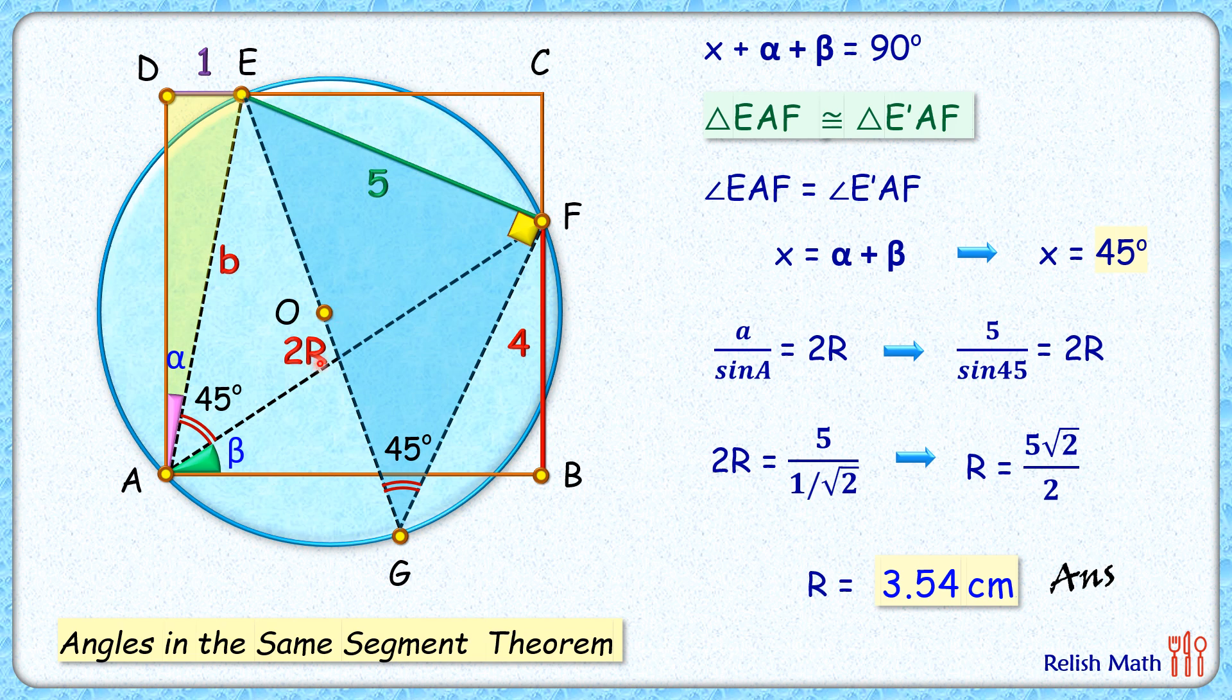So sin(45°) = 5/(2R), or 2R = 5/sin(45°). Solving further, you can get the radius of this blue circle.